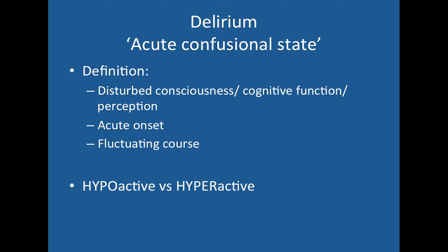We'll start off with delirium, which is otherwise known as the acute confusional state. The definition is a disturbed consciousness or cognitive functional perception with an acute onset and fluctuating course. These patients generally have a decreased level of consciousness, something about their cognitive function is deranged — whether that be their attention or their problem solving ability — and they may also have problems with their perception, maybe auditory or visual hallucinations.